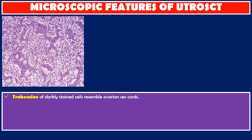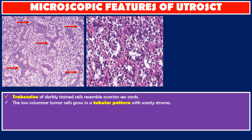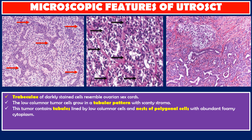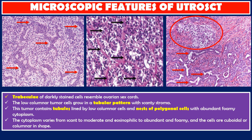This photo shows trabeculae of darkly stained cells resembling ovarian sex cords. The low columnar tumor cells grow in a tubular pattern with scanty stroma. This tumor contains tubules lined by low columnar cells and nests of polygonal cells with abundant foamy cytoplasm. The cytoplasm varies from scanty to moderate, and is eosinophilic to abundant and foamy. The cells are cuboidal or columnar in shape.